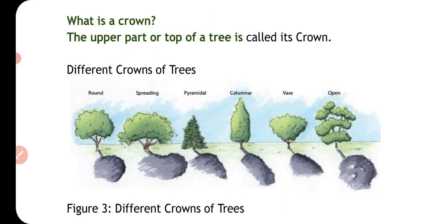Now I will talk about what is a crown. The upper part or top of a tree is called its crown. There are different types of crowns: round, spreading, pyramidal, columnar, vast and open.